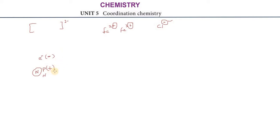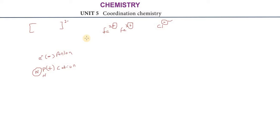Here we have cation and anion. Positive charge is cation, negative charge is anion. There is cation and anion — in cation we have such things.